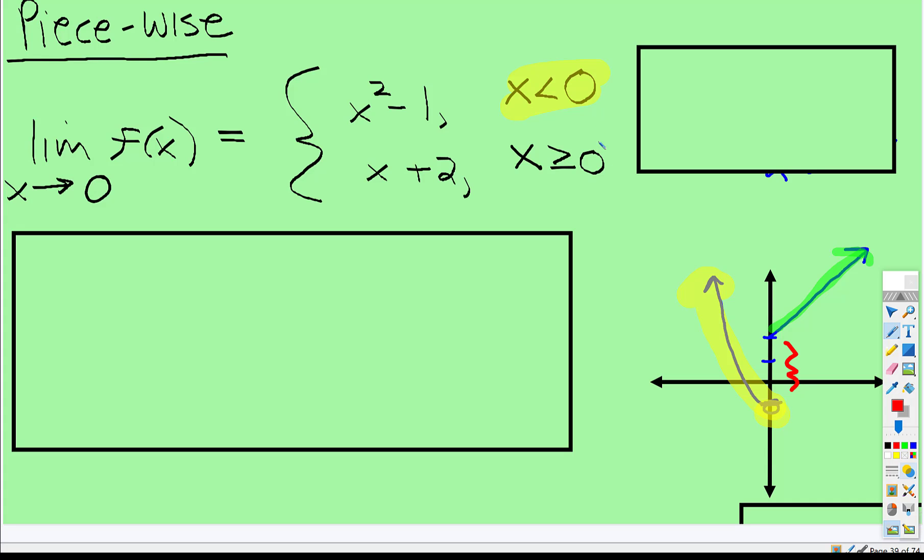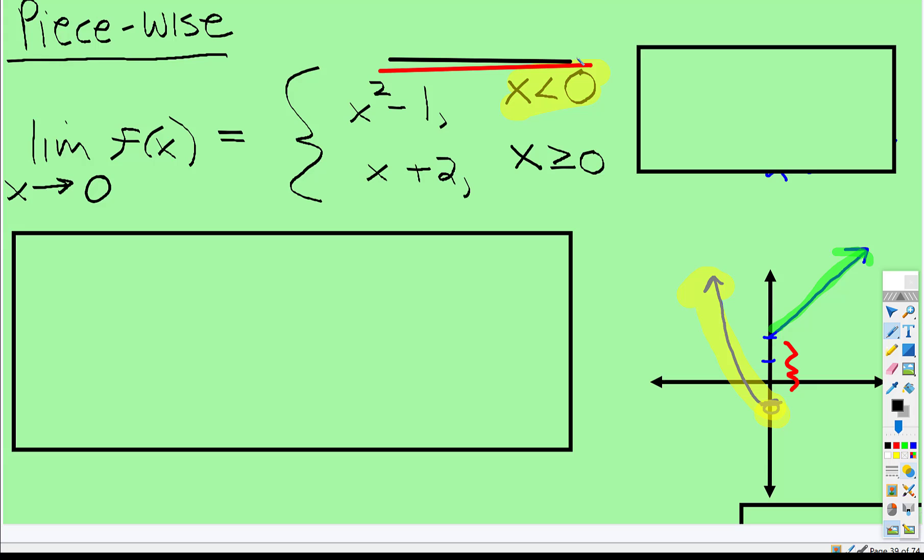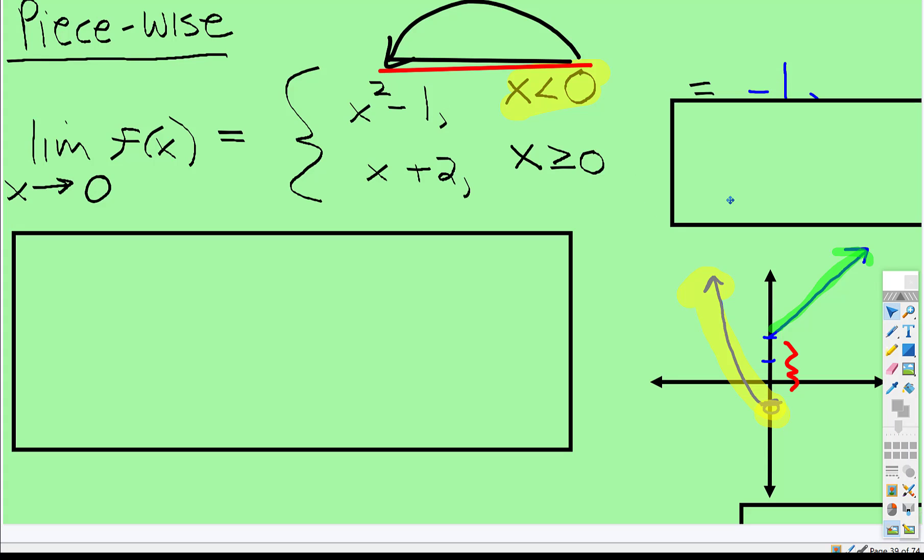See this zero right here? If you plug zero into that function, zero squared is zero, zero subtract one is negative one.